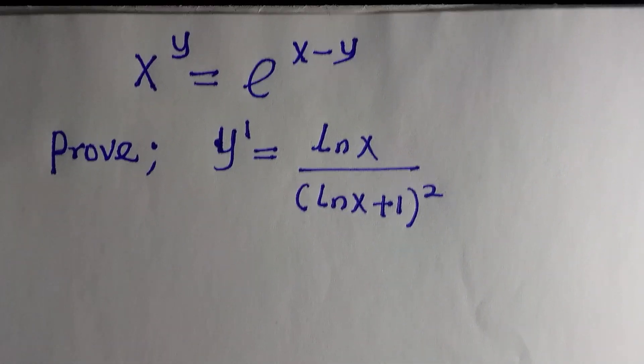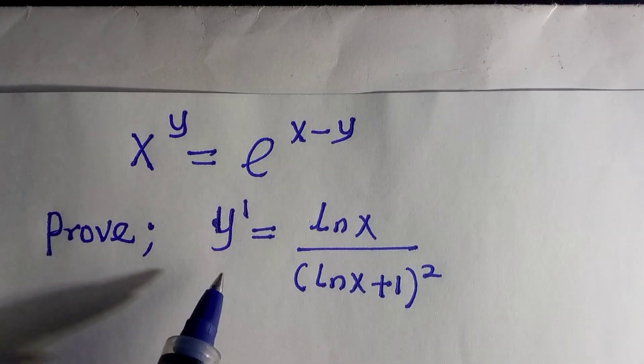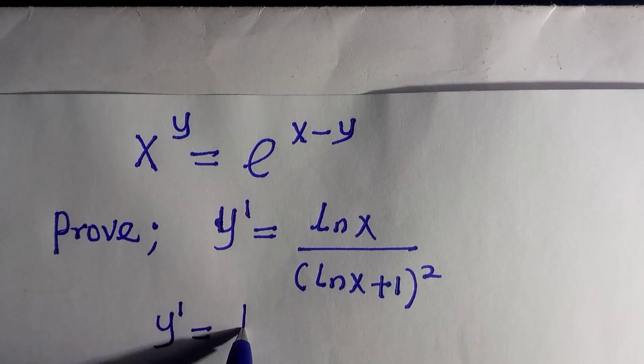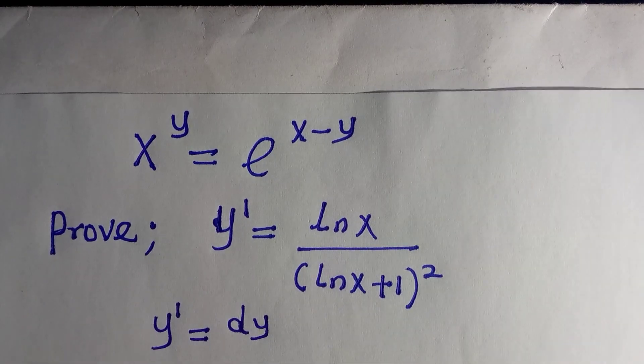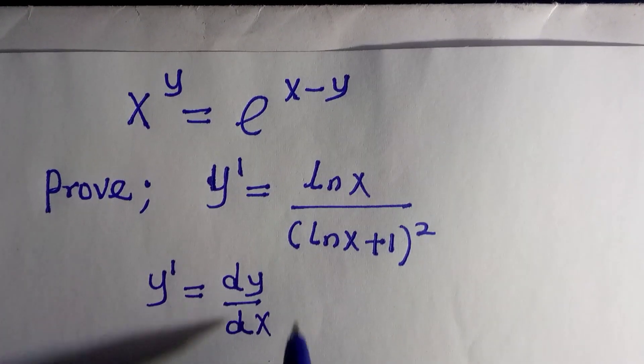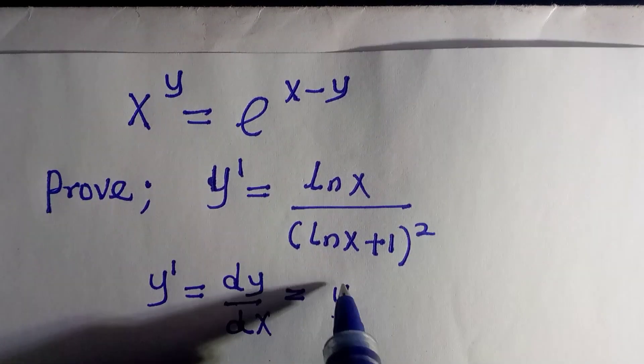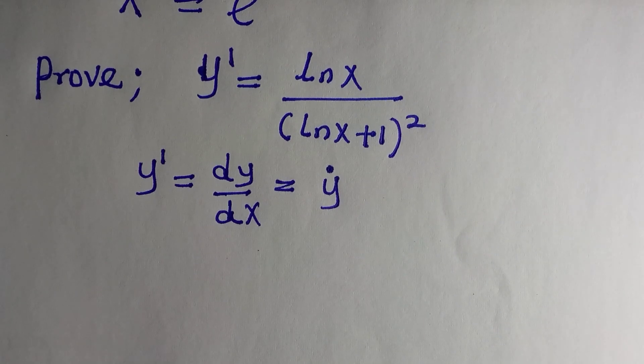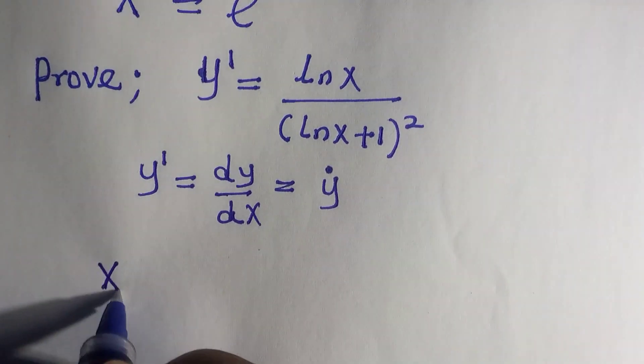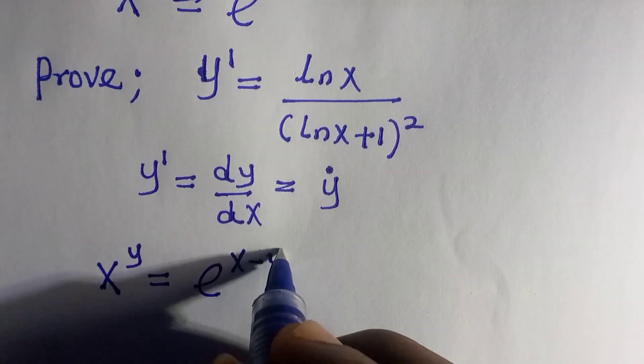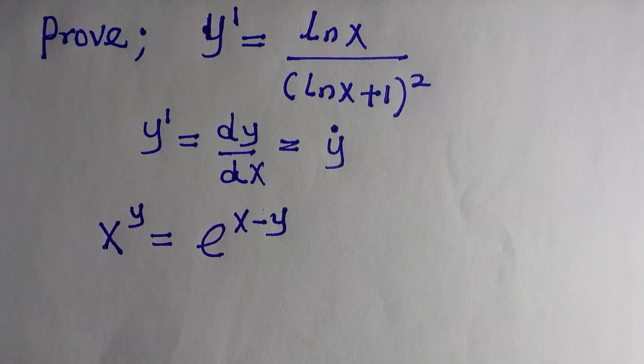Welcome to another video. We have y prime which is known as dy/dx, which is still the same thing as y dot. These are derivatives. To start with, we have x to the power of y equals to exponential x minus y.